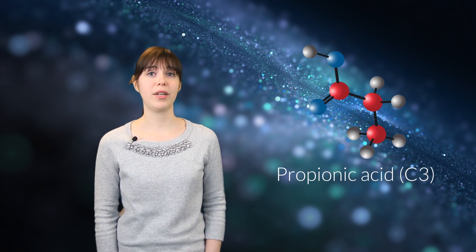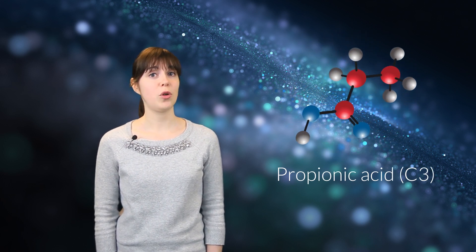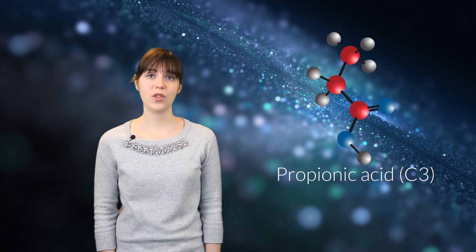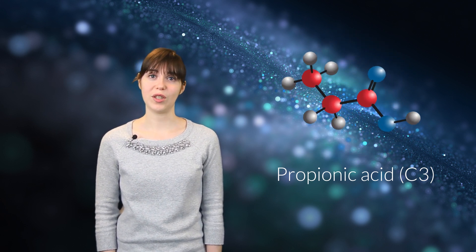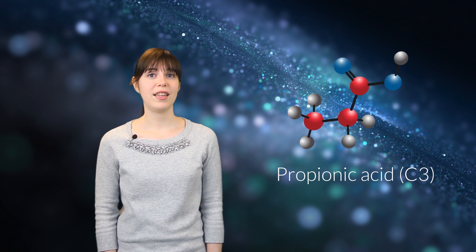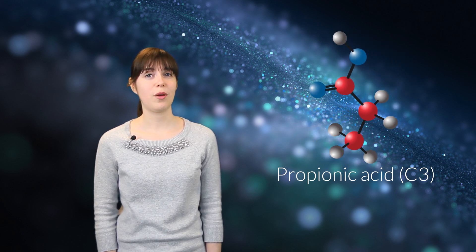Third in the family is propionic acid with three carbon atoms. This molecule is used as a mold inhibitor and is therefore used a lot in grain preservation. Also in liquid feeding this molecule can be used to keep down the amount of yeasts.